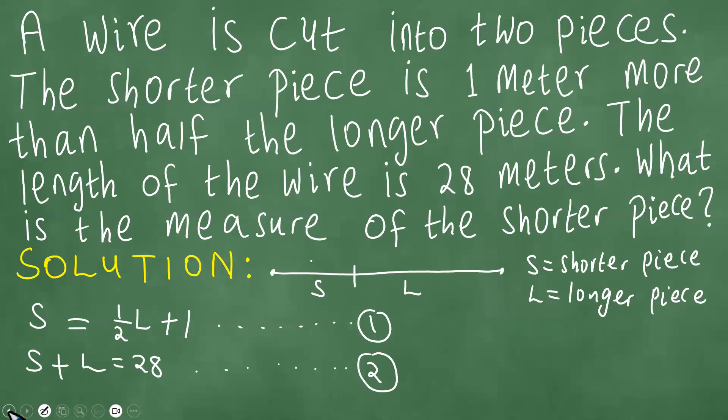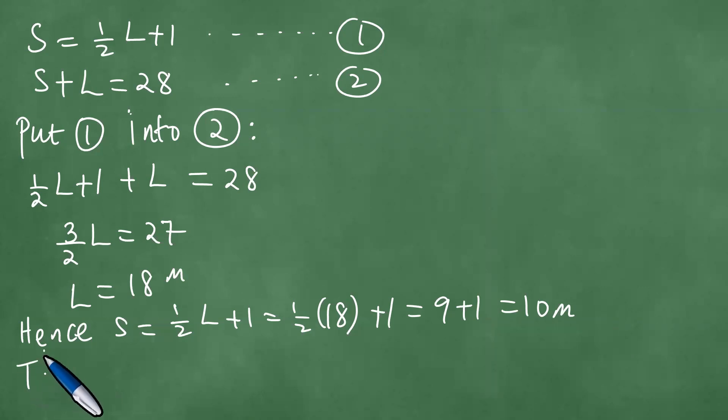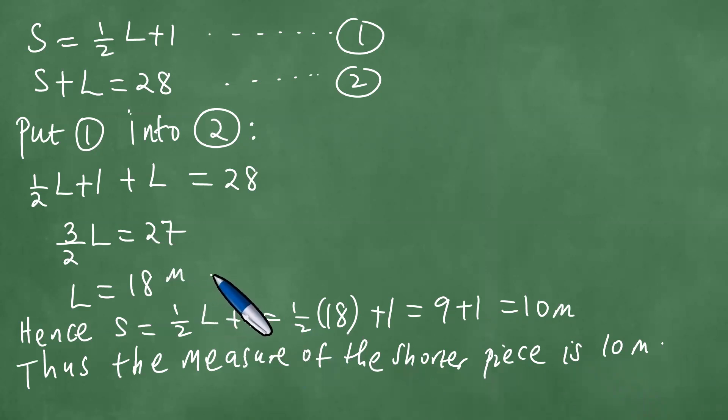So obviously, the question has been, what is the measure of the shorter piece? In other words, the measure of the shorter piece is 10 meters, and the 18 meters is the measure of the longer piece. So we have the 10 and we have the 18 like that. And we've solved this problem. Thanks everybody for your time and goodbye to you.